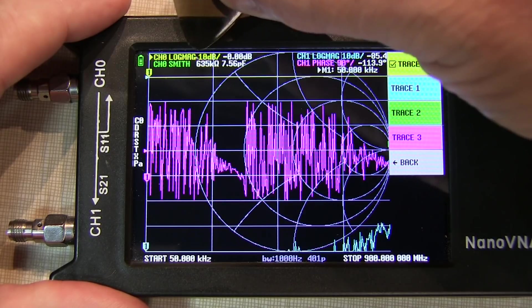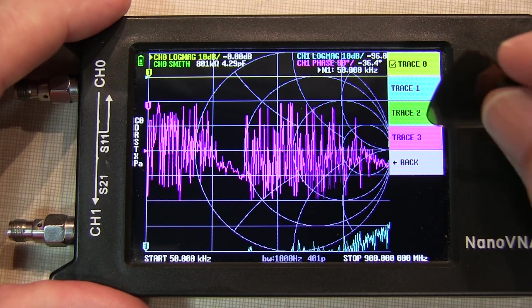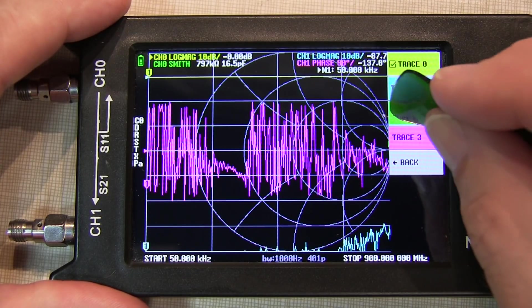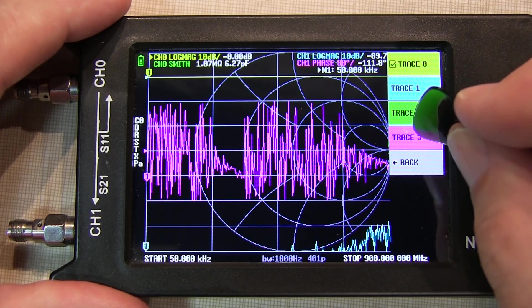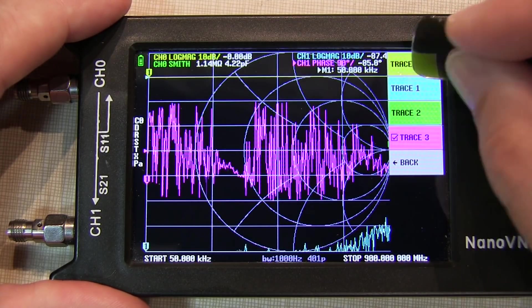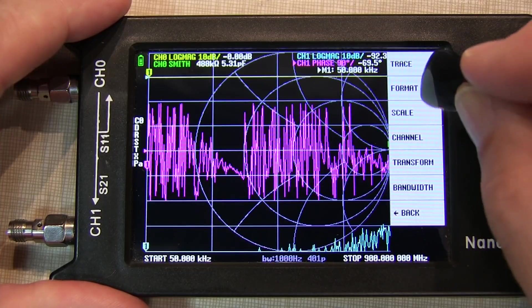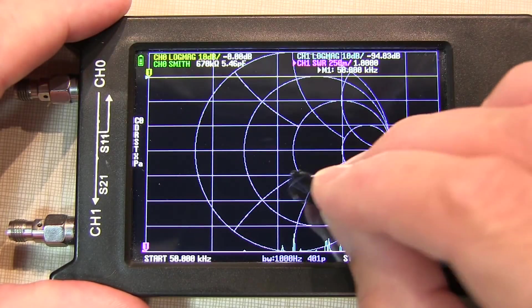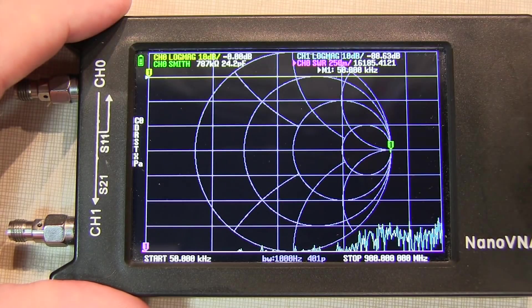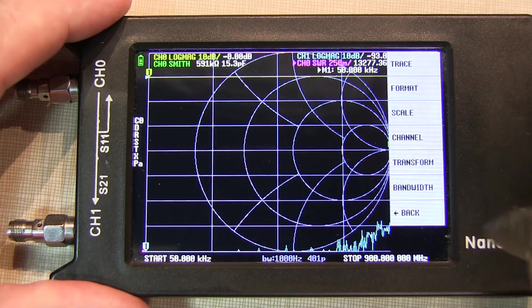Trace 2 is the complex impedance on the Smith chart, so we'll leave that one. Trace number 3 is the phase through the amplifier. I don't really care about that, but maybe we'll change trace number 3 to be the SWR. So let's go back to format SWR, and then we have to tell that that's going to be on channel 0. So now I've got the traces that I want.